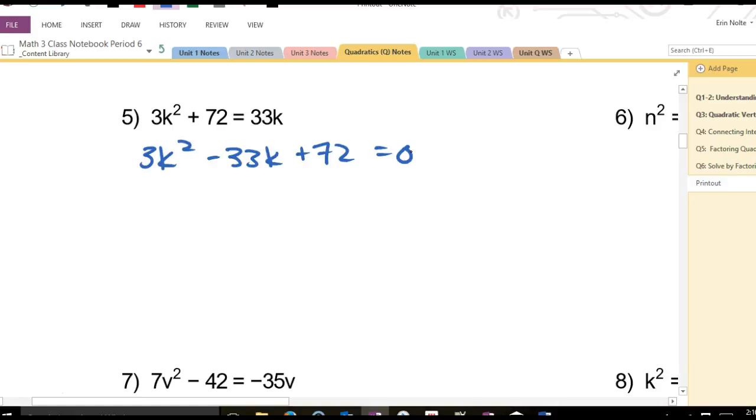So, at this point, I can factor. Now, I will tell you that it will always be easiest to factor if you can make things smaller. So, can I make things smaller? What can I divide everything by? 3. So, if I can make things smaller, I always want to try to do that. That's going to make factoring way easier. I can divide everything by 3. So, if I divide everything by 3, I'm going to have k squared minus 11k. What's 72 divided by 3? 24. Good.